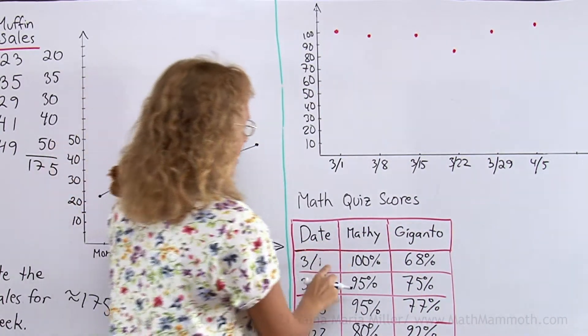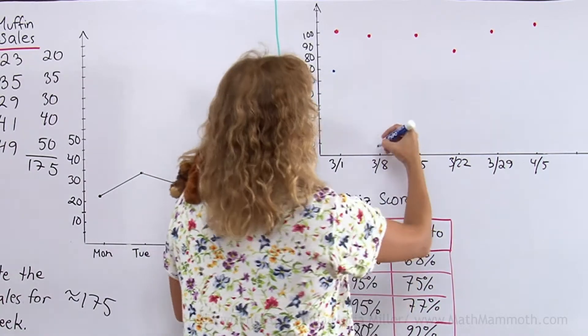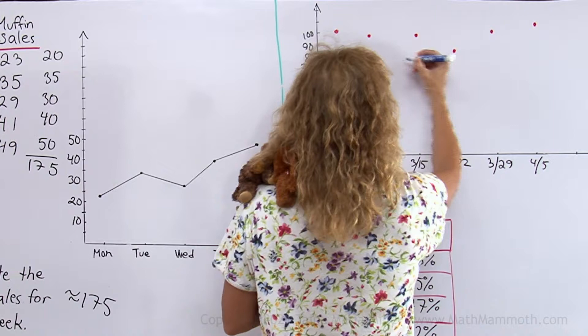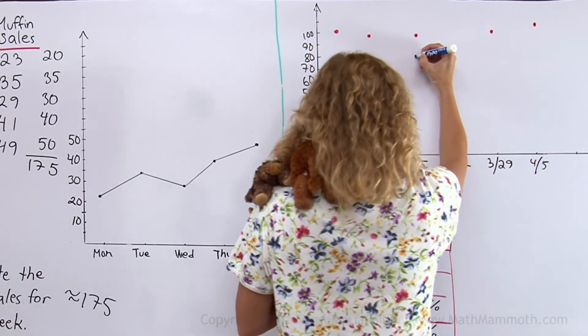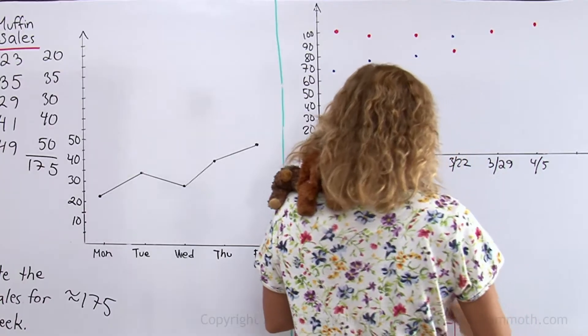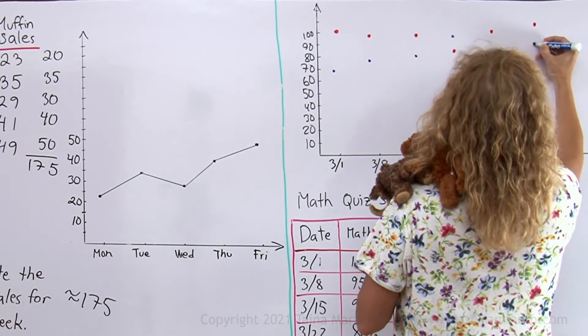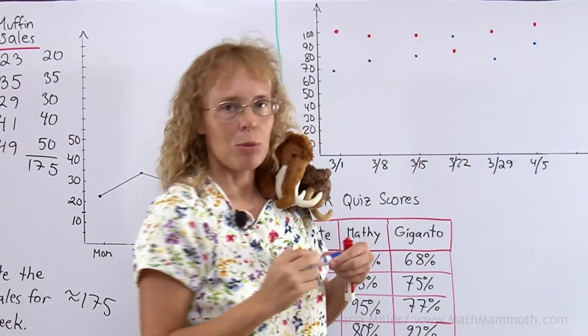Okay, and then, for Giganto's starting, the first date, and 68%, then 75%, then 77%, then you did really good, 92%. There. Now, it's time to connect them with lines.